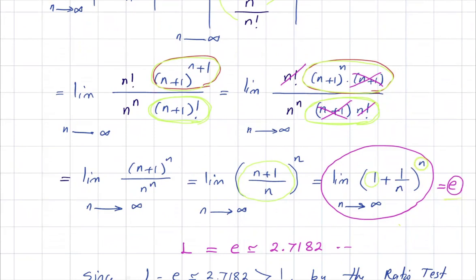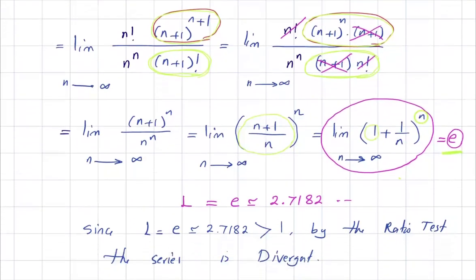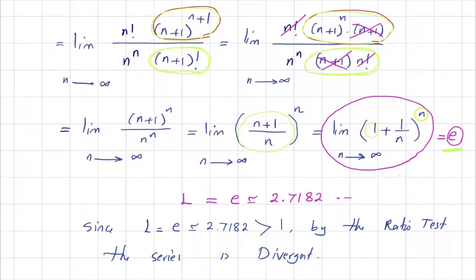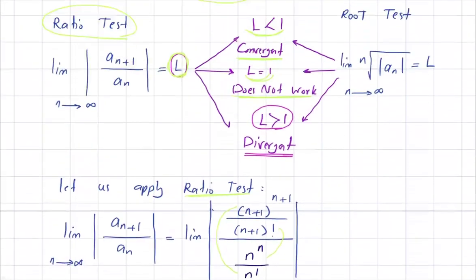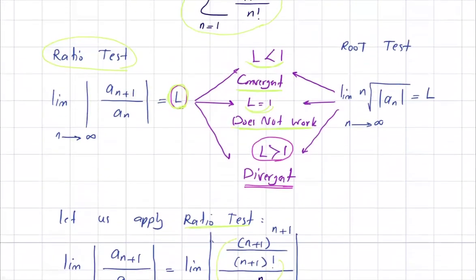This limit equals the Napier number e, which we learned in elementary calculus. So L equals e, approximately 2.7182 and so on. Since L is more than 1, by the ratio test, this series is a divergent series.